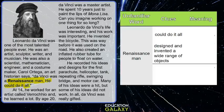It says he designed and invented a wide range of objects. Here in the last paragraph, it says what Leonardo da Vinci invented and designed. Look at the range: parachute, helicopter, tank, repeating rifle, swinging bridge, and motor car.